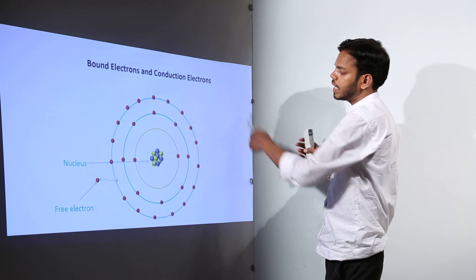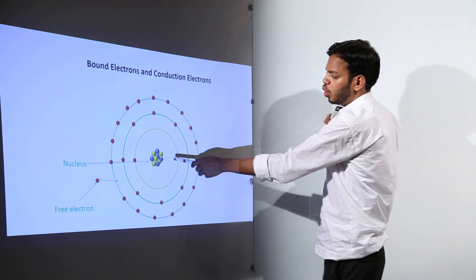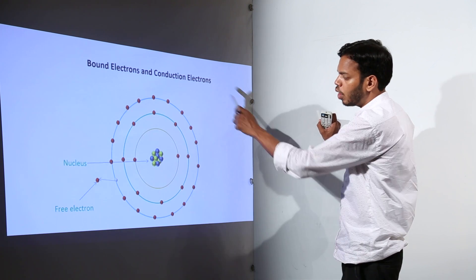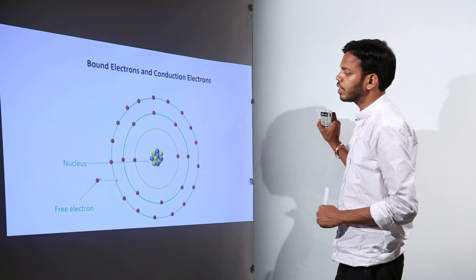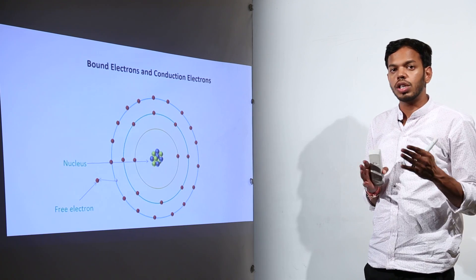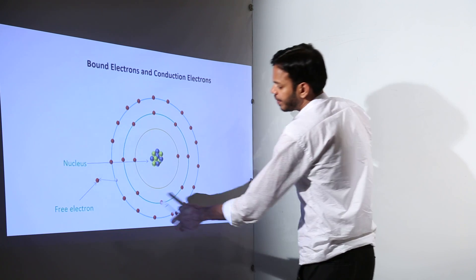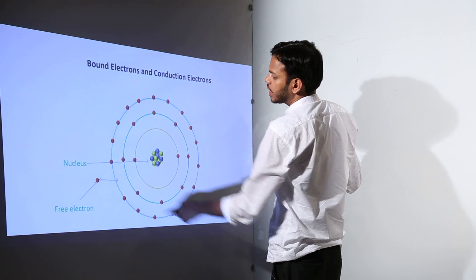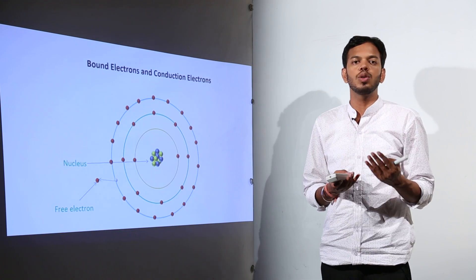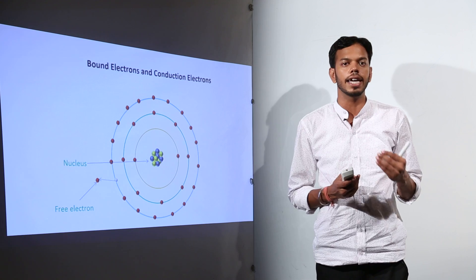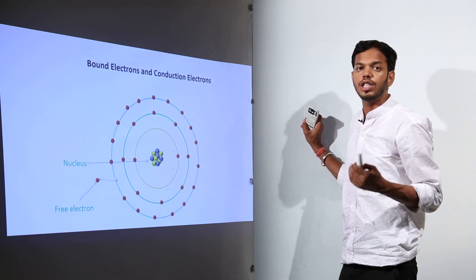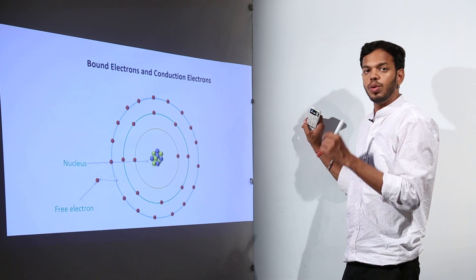Suppose this is the structure of an atom. At the core, we already know that there is a nucleus which consists of protons and neutrons. And on the outermost shells, electrons are revolving. The outermost shell electrons are called valence electrons, and they are very feebly attracted towards the nucleus. Whereas the inner electrons are very strongly attracted to the nucleus.